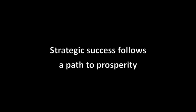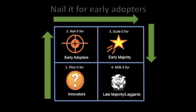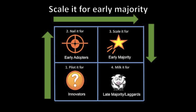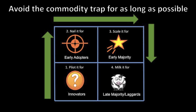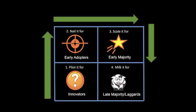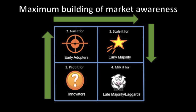Strategic success follows a path to prosperity and it goes like this. Pilot your product for innovators, nail it for early adopters, scale it for the early majority, and you'll avoid the commodity trap for as long as possible. By doing that, you've created maximum building of market awareness.